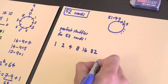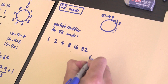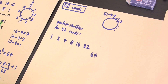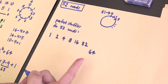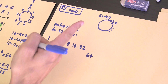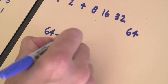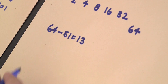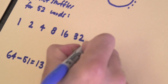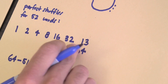Now here we have to be a little careful — for the sixth shuffle, we get to 64. Well, 64 is once around the clock of 51 hours, and 64 minus 51 is 13. So after six shuffles, card one is in position 13.